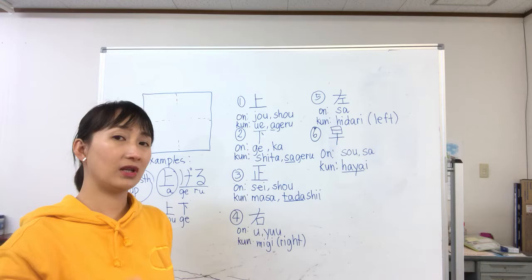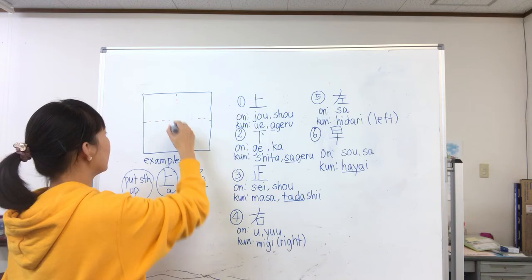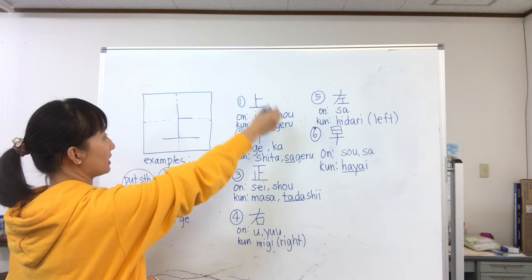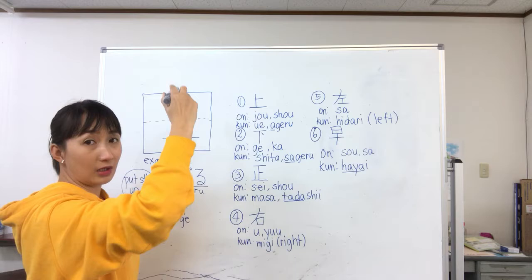This is how you write uwe — one, two, three. Usually Chinese characters are written horizontally first, but this kanji is special because we write a vertical line first.